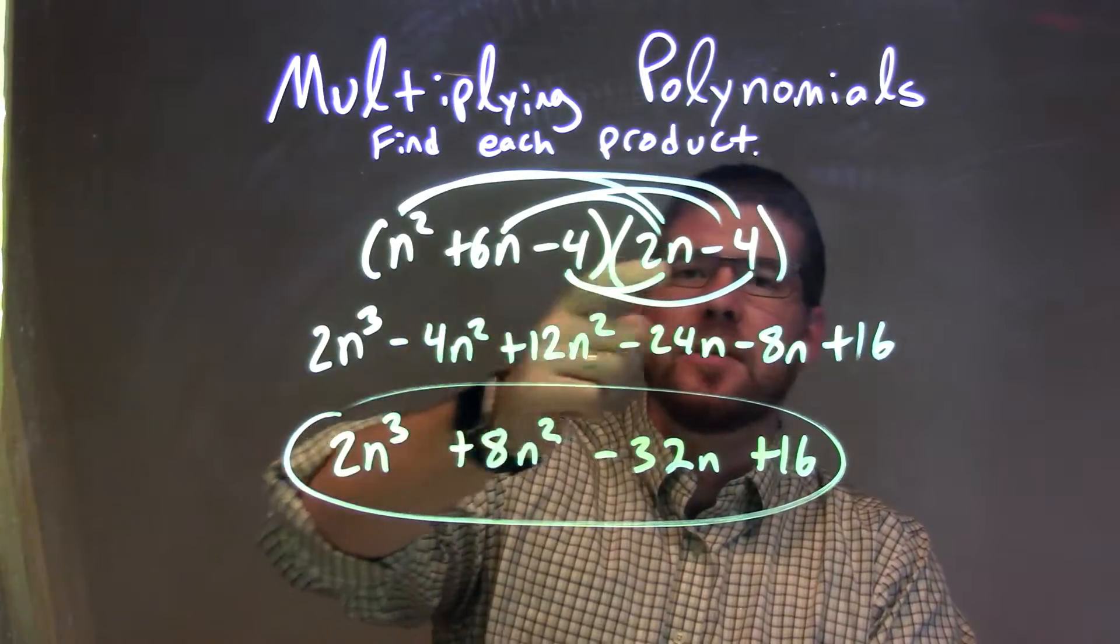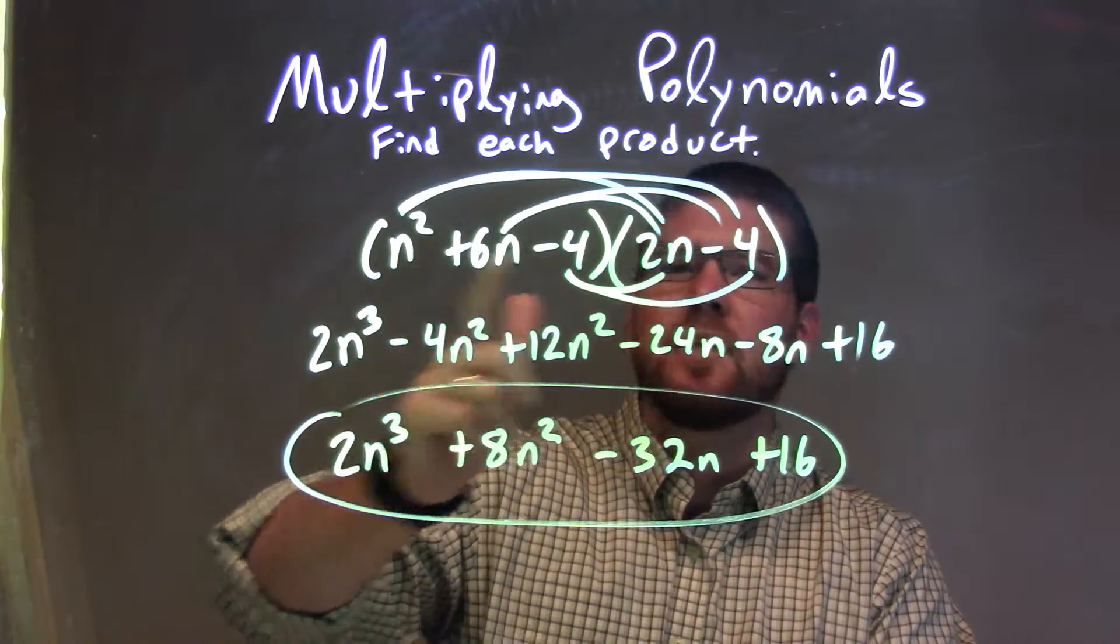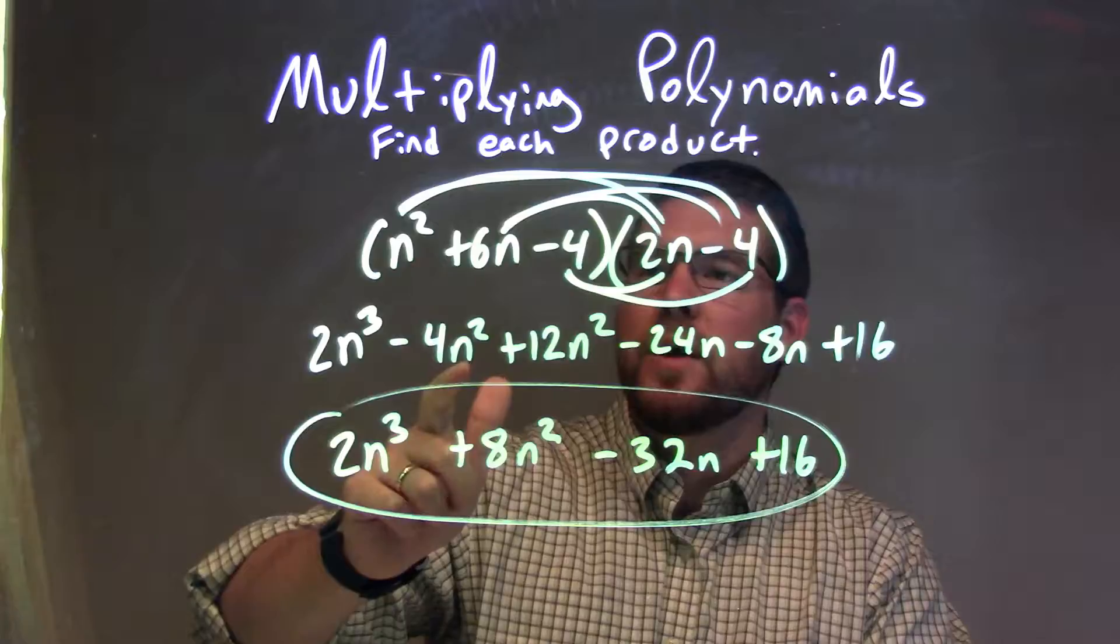All parts of the first parenthesis times all parts of the second one. n squared times 2n was 2n to the third, and n squared times minus 4 was minus 4n squared.